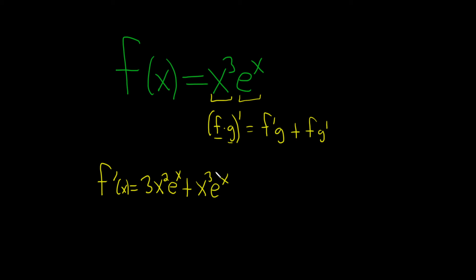Let's go ahead and check our work. The derivative of x cubed is the derivative of the first. You bring down the 3, subtract 1 from the exponent, times the second, which is e to the x, plus the first, which is x cubed, times the derivative of e to the x, which is just e to the x.